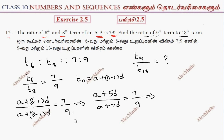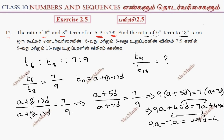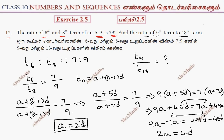Cross multiplying: 9 into (a + 5d) equals 7 into (a + 7d). This gives 9a + 45d = 7a + 49d. So 9a minus 7a equals 49d minus 45d, giving 2a = 4d, therefore a = 2d.